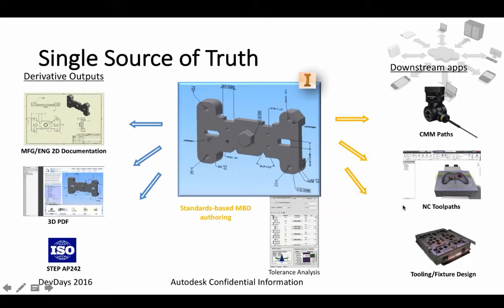In the previous release there was a start at creating model-based definition, but now it is really coming in the next release. Directly in the 3D model, you'll be able to add all the annotation necessary for people to actually make that model. It also provides derivative outputs — meaning the annotations you add inside the 3D model will be available in the 2D drawing as well, and you'll be able to export it to a 3D PDF file and to a specific type of STEP file.